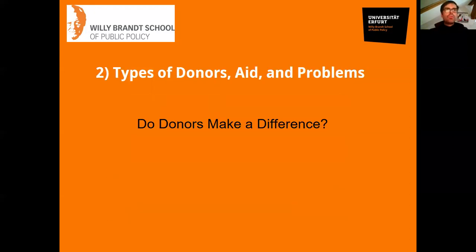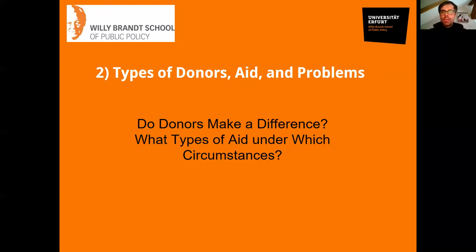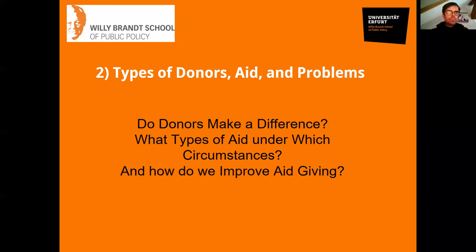In the next part of the course, we will look at different types of donors, different types of aid and aid giving, and the problems involved. We can start with simple questions such as: do donors actually make a difference? Does it matter if Sweden gives money versus Germany? We look at different types of aid to see whether effectiveness depends on context and modalities. Prominent questions include how conditional aid should be. All these questions should lead to the idea of how to improve aid giving and make it smarter, rather than abolishing it or simply pumping more money into countries.